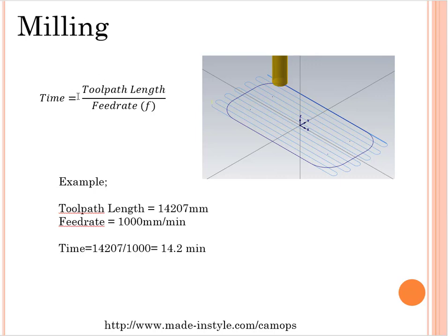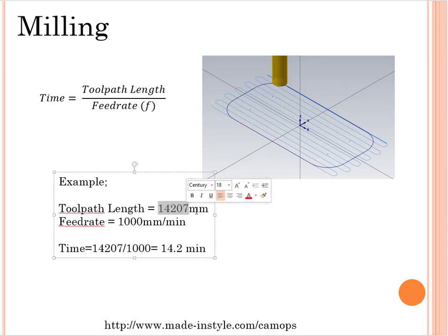Our formula is toolpath length divided by feed rate — that's quite easy. Focusing on our example here, I need to calculate my toolpath length. My unit is millimeter, and my toolpath length is as shown. I also need to know my feed rate, which is calculated as 1000 mm divided by time. According to my formula, I can easily calculate my cutting time by dividing my toolpath length by my feed rate.